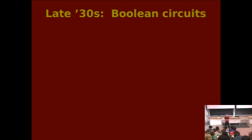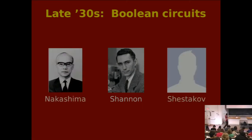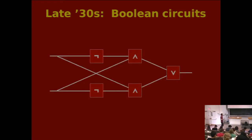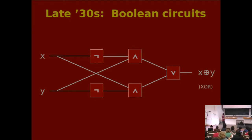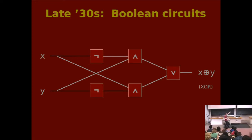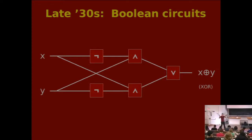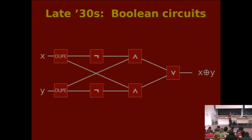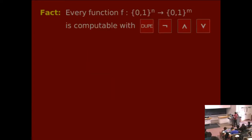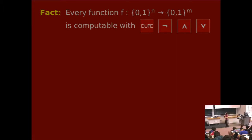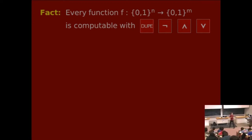Let me dial back time to the late 1930s when Boolean circuits were invented. They're usually credited to Shannon, Claude Shannon, but they were actually basically simultaneously invented by Nakashima in Japan and Shestakov in the Soviet Union. So this is a Boolean circuit — there are gates, NOT gates, AND gates, OR gates. Input bits go through the circuit and make an output bit. This little circuit I drew happens to compute the XOR of X and Y. One thing I don't like about this diagram is that here these wires are just splitting into two wires, which is a little weird. So I'm going to invent a new gate called 'dupe' that takes a bit and outputs two copies of that bit. It's a basic fact that if you have any Boolean function you want to construct, you can make a circuit that computes it using just AND, OR, and NOT gates — and dupe gates if you also want wire splitting.